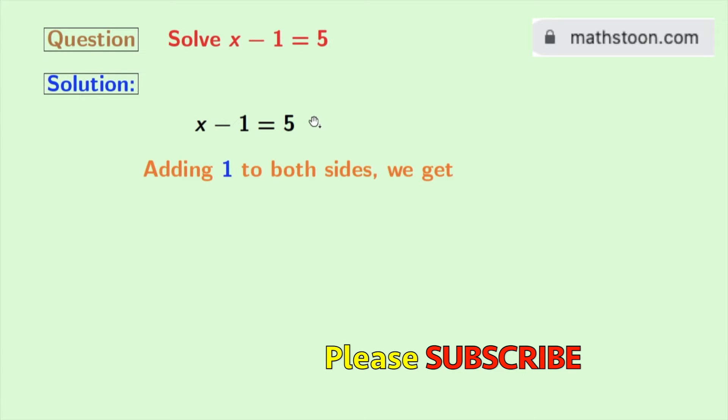Doing that, we get x minus 1 plus 1 equals 5 plus 1. Look, in the left-hand side we have minus 1 plus 1, which means 0, so we are left with x.